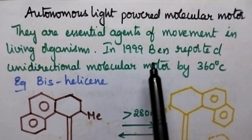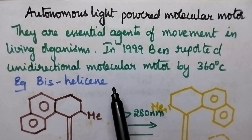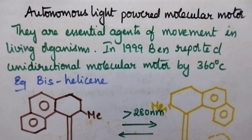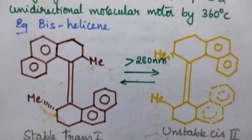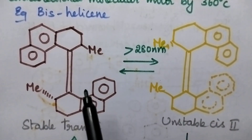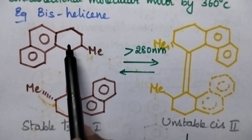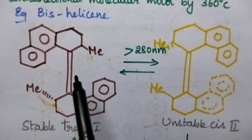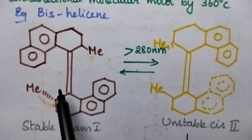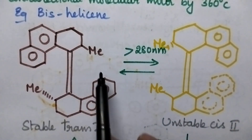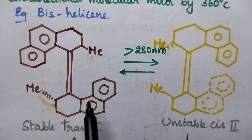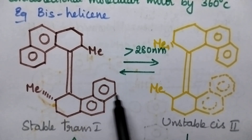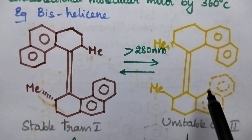In the year 1999, Ben reported a unidirectional molecular motor capable of 360-degree rotation. The best example is bishelysine. Due to the presence of a double bond between the two cyclohexane molecules, bishelysine exhibits trans isomerism, existing in a stable trans configuration.